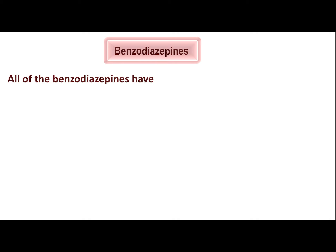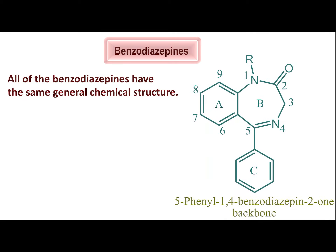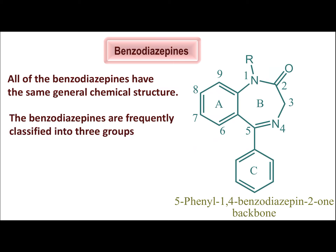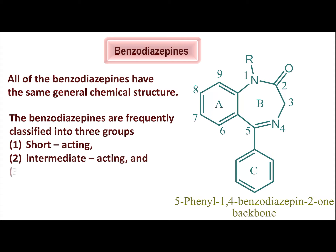All benzodiazepines have the same core chemical structure. We can see here this benzodiazepine — it has a phenyl ring attached to a benzodiazepine structure, specifically a 1,4-benzodiazepine. Benzodiazepines are frequently classified into three groups: short-acting, intermediate-acting, and long-acting.